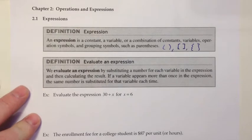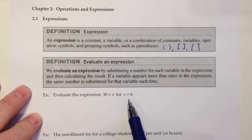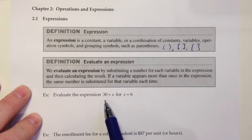Let's look at an example. Evaluate the expression 30 divided by x for x equals 6. As we just read, the way you would evaluate this expression would be to substitute for x the value 6 in our initial expression over here.